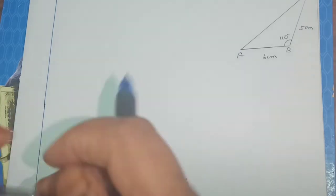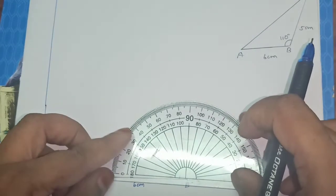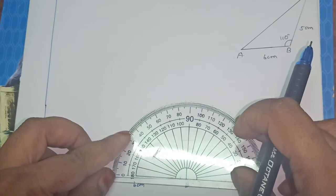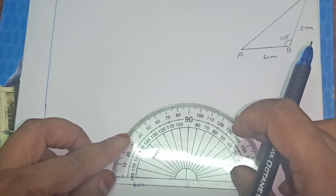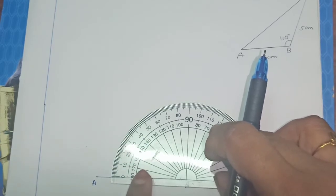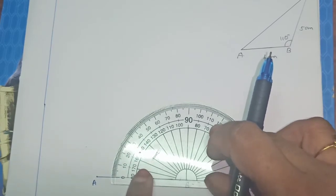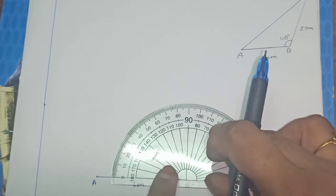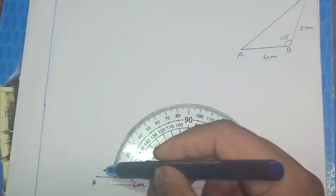Now, next, take your protractor and keep the middle point at point B, so that exactly this line coincides. You can see here, where 0 comes, you have to exactly coincide on AB. This line, point should be in the middle, here in this middle. So now where is 0? Here, this is the line.